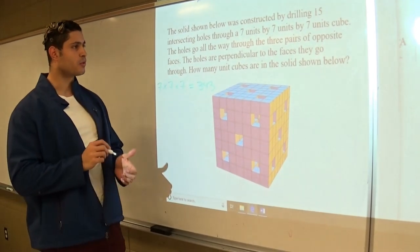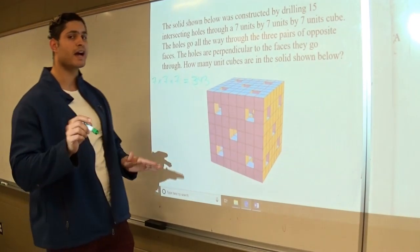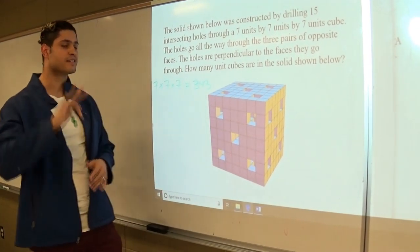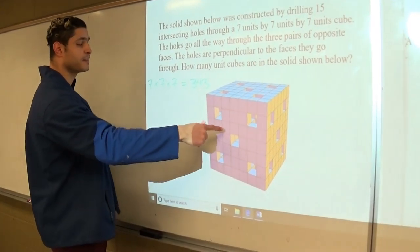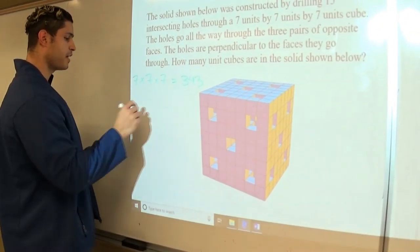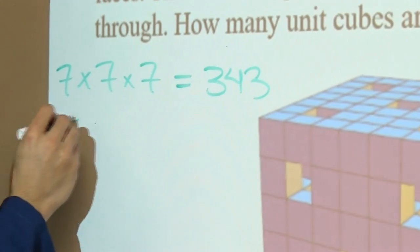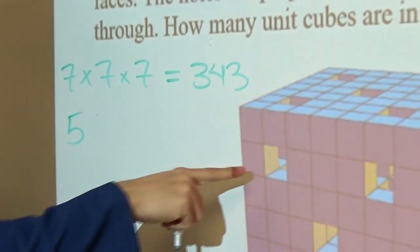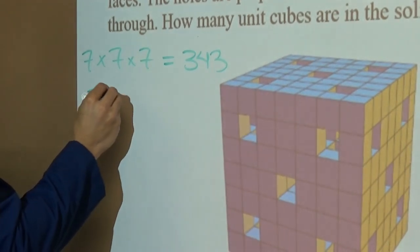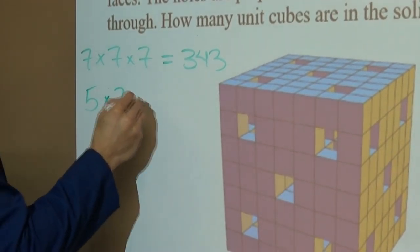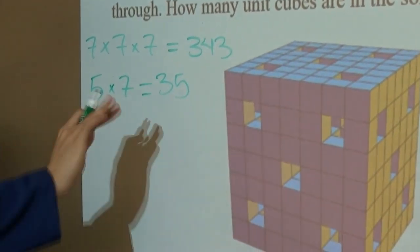This problem tells us that we drill 15 intersection holes, but we're actually drilling through three phases only. In the first phase of the cube, we drill five holes, and each goes through seven unit cubes. That equals 35 unit cubes that are gone.